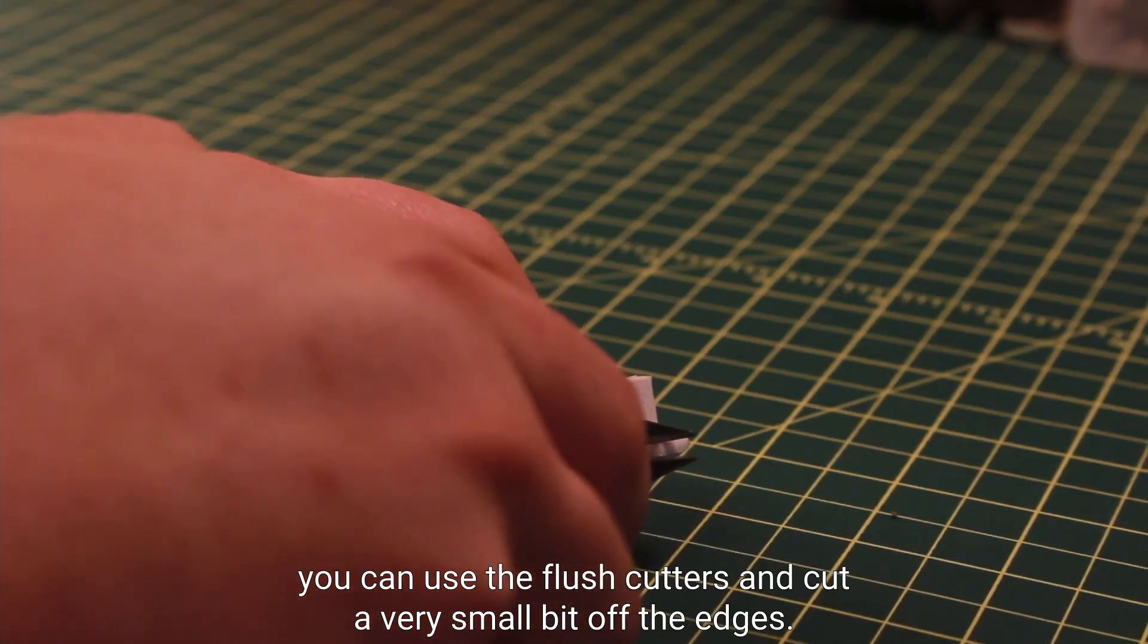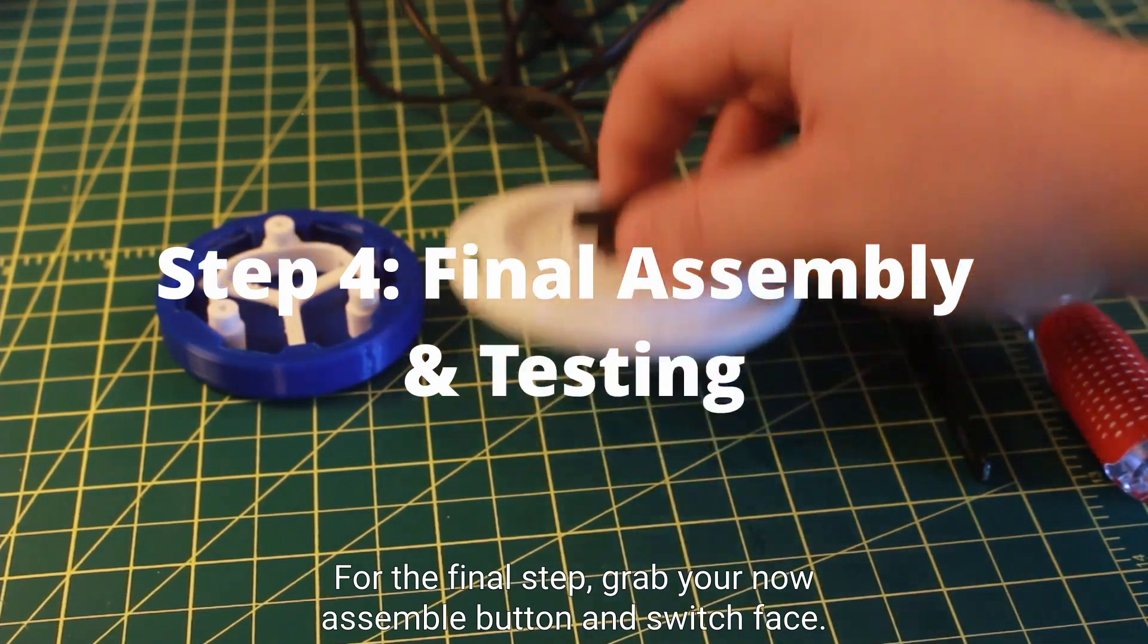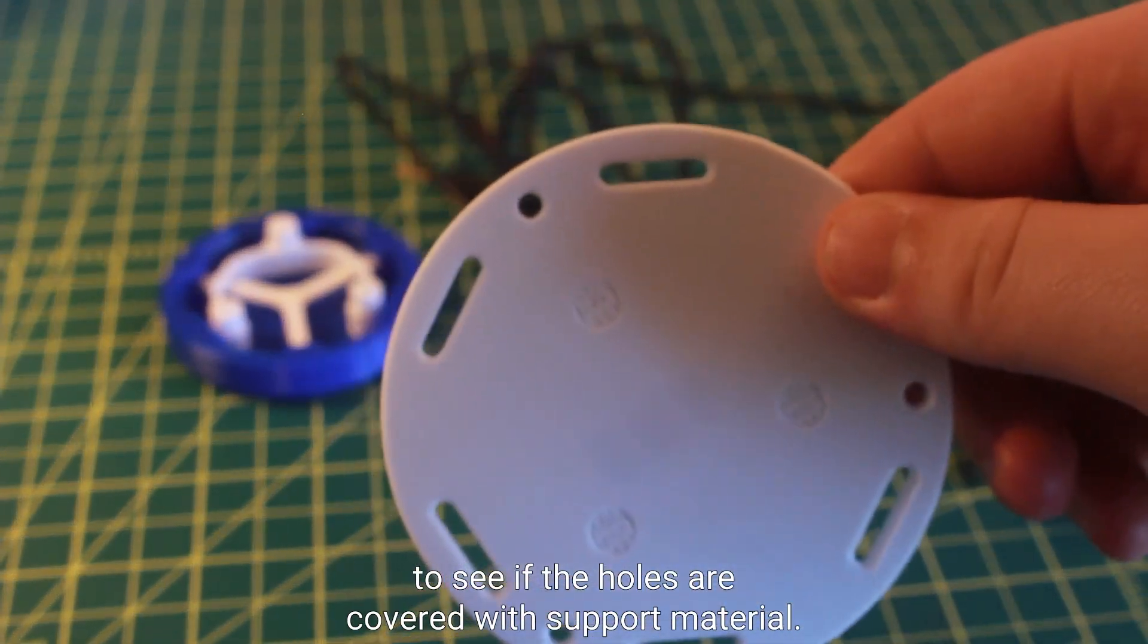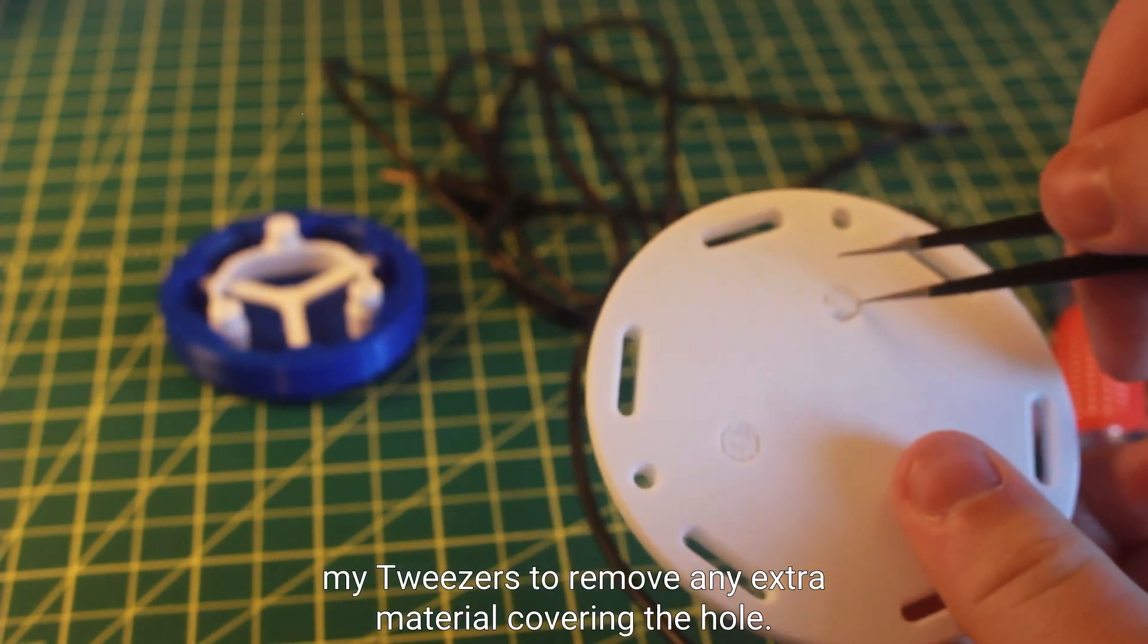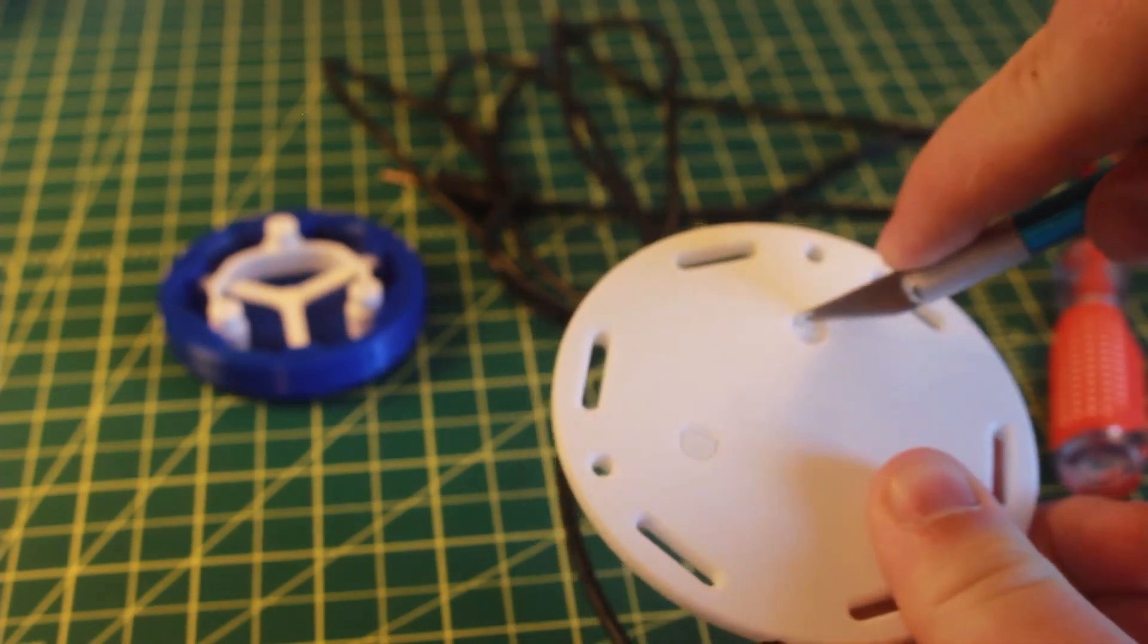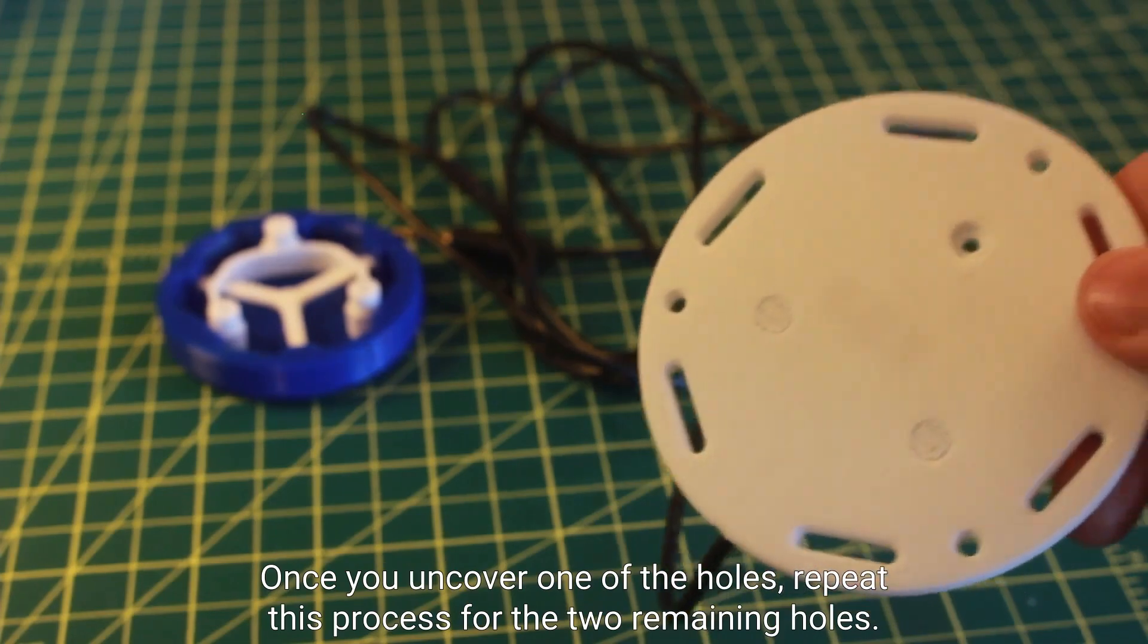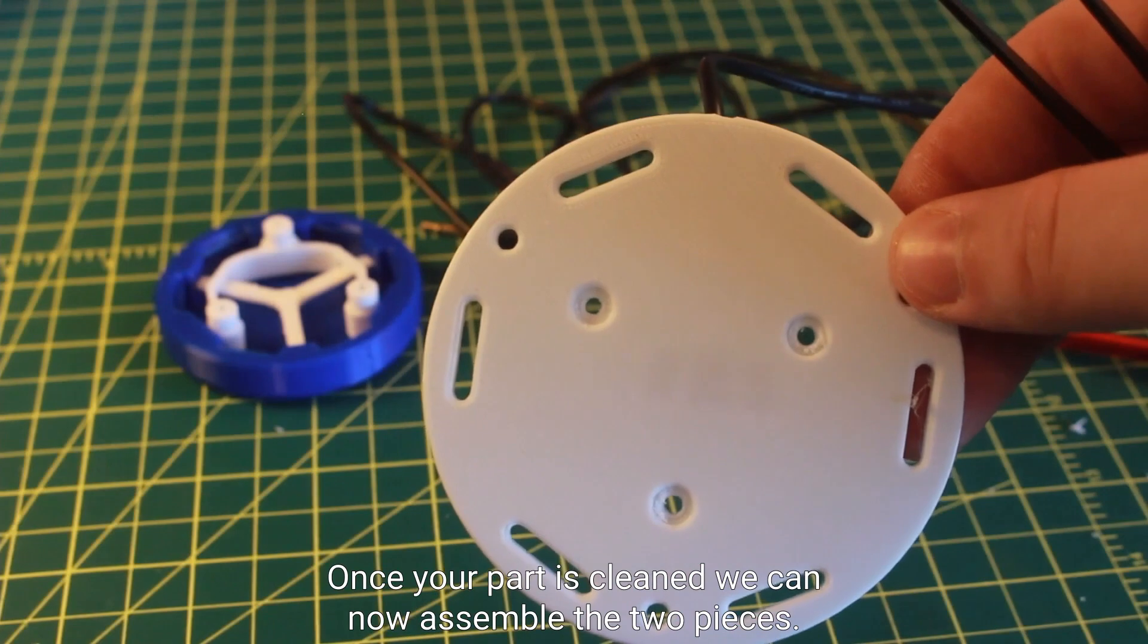For the final step, grab your now assembled button and switch base. Check the bottom of your switch base to see if the holes are covered with support material. In my case they are, so I'll use my tweezers to remove any extra material covering the holes. You may also like to use the hobby knife or even the screwdriver to help in this process as well. Once you uncover one of the holes, repeat this process for the two remaining holes. Once your part is cleaned, we can now assemble the two pieces.